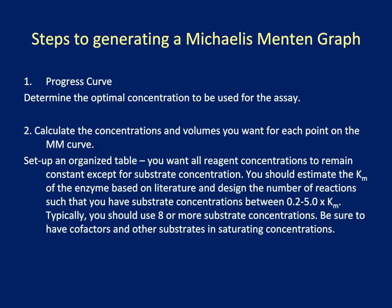Once you've determined the optimal protein concentration to be used for the assay, calculate the concentration volumes you want for each point on the Michaelis-Menten curve. You need to set up an organized table. You want all reagent concentrations to remain constant except substrate concentration. You should estimate the Km of the enzyme based on literature and design the number of reactions such that you have substrate concentrations between 0.2 and 5 times the Km. Typically, you should use 8 or more substrate concentrations. Be sure to have cofactors and other substrates in saturating conditions.